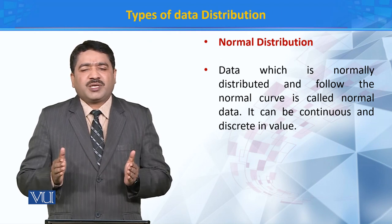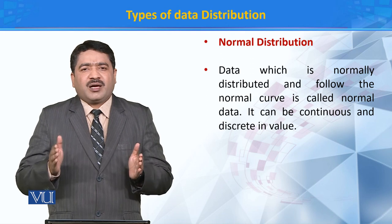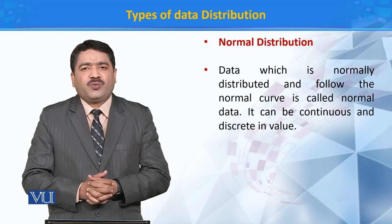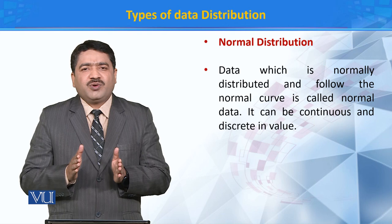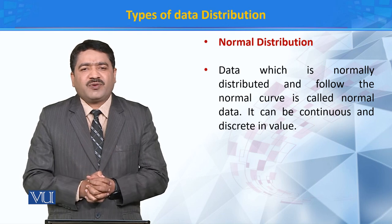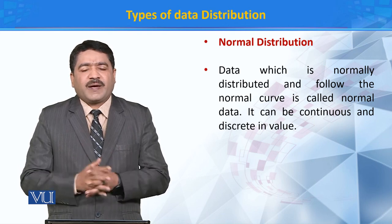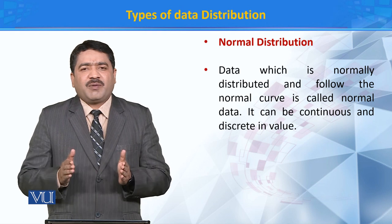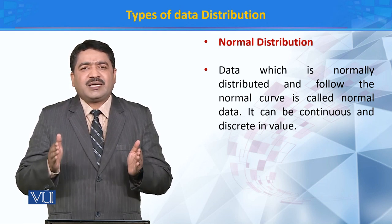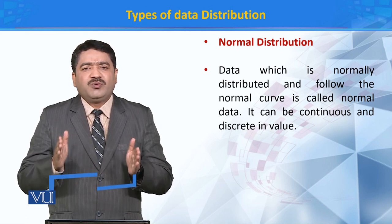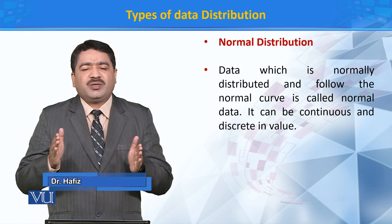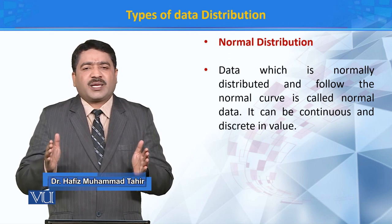Normal distribution के अंदर जो data है उसकी values का अगर हम mean निकाले और हर individual value का mean से difference निकाले तो वो कम होता है. इसके मुकाबले में एक ऐसा data जो asymmetric या skewed data होता है, उसमें mean value और individual values के दर्मियान जो difference होता है वो ज्यादा होता है.